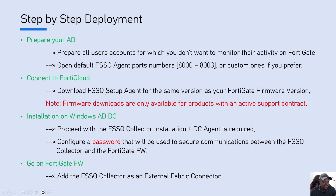Next, connect to FortiCloud to download the FSSO setup agent. You need to download the same version as the FortiGate firmware you are running — for example, if your FortiGate is on firmware version 7.0.10, download the FSSO agent version 7.0.10 at minimum. It's recommended to use the same version as your FortiGate firmware. Also important: to download the FSSO setup agent, you need an account with an active FortiNet support contract.